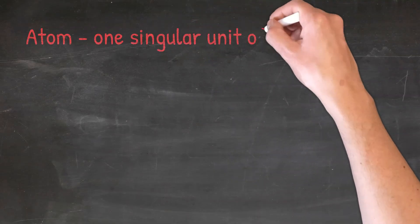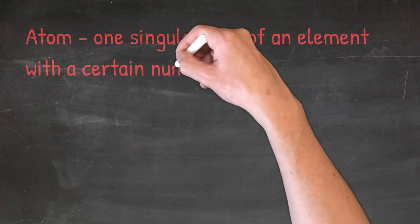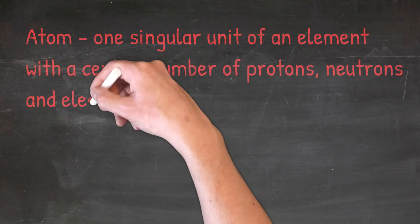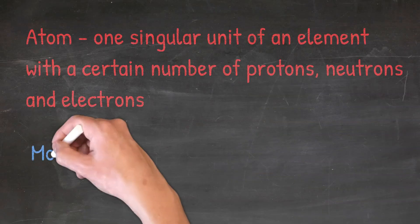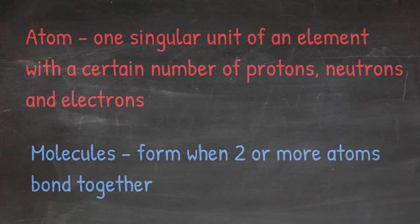So remember, an atom is just one singular unit of an element with a certain number of protons, neutrons, and electrons. Molecules form when two or more atoms bond together.